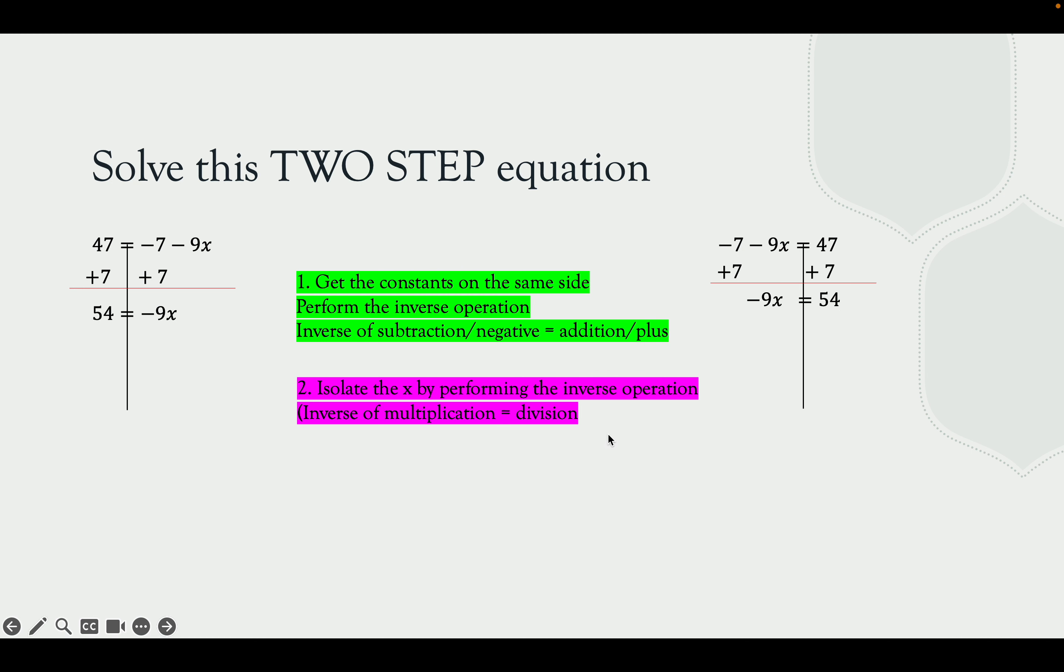We're going to isolate the x by performing the inverse operation again. The inverse of multiplication is division. So we're going to divide both sides by negative 9. And we'll get x equals negative 6. We can double-check our solution.